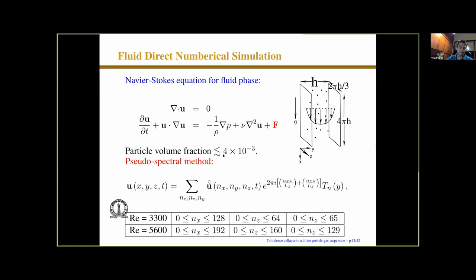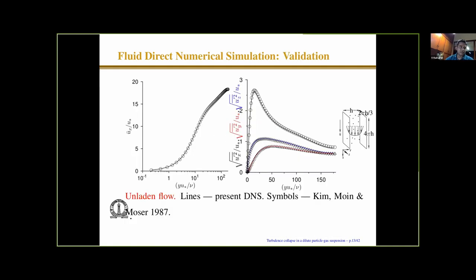The particle volume fraction is very small, about 4×10⁻³. But because of the density ratio, the mass fraction is much larger — the mass of solids to mass of fluid could be up to 8000 in our simulations. The simulations are done by the pseudo-spectral method: Chebyshev in the wall-normal direction and Fourier in the other two periodic directions. This is standard, known for 30–40 years. We show that we have sufficient resolution for the Reynolds numbers analyzed. This is a comparison with the classic work of Kim, Moin, and Moser from about 35 years ago, and we accurately capture the mean velocity and the root mean square of the fluctuating velocities. The DNS for an unladen channel flow is accurately captured.